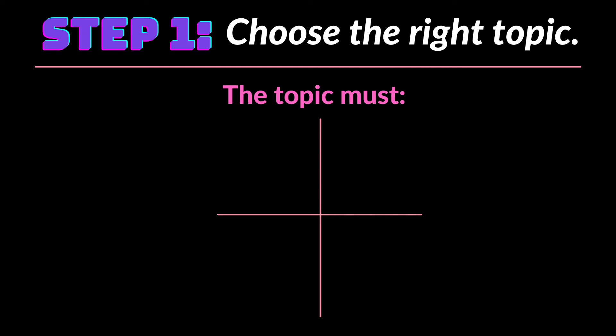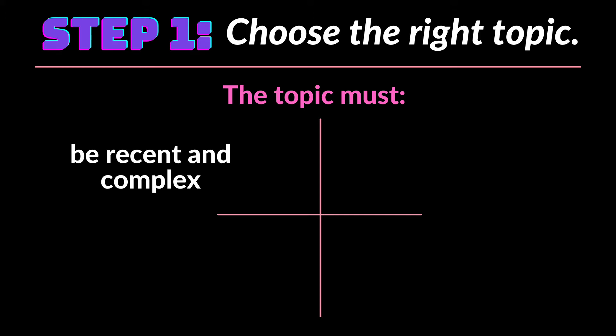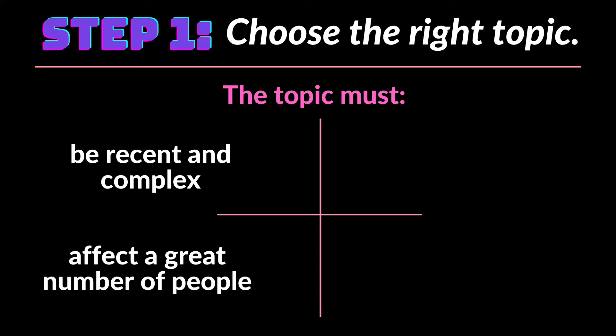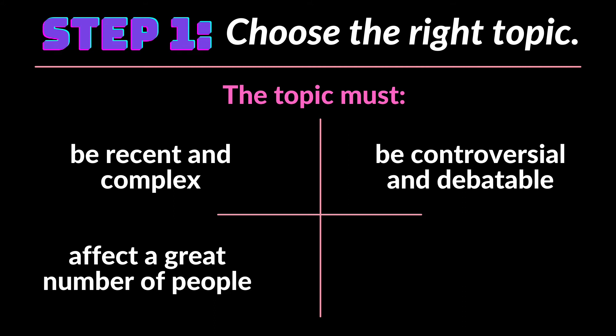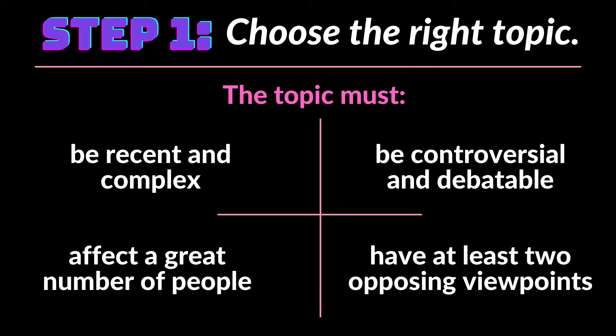The first step is critical and that is to choose the right topic. A significant topic must be recent and complex. Since it is a social issue, it must affect a great number of people for it to be considered interesting and effective. The topic must also be controversial and debatable — there should be at least two opposing or contradicting viewpoints where one will be the writer's stand.